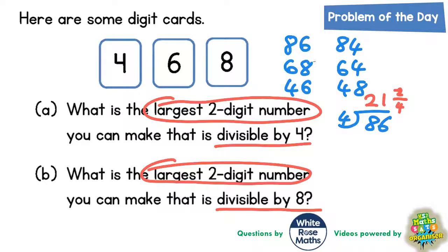So that's 21 and two quarters, or in other words, 21 and a half. But that's got a remainder, so 86 doesn't work.